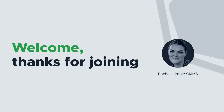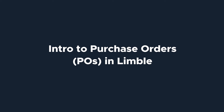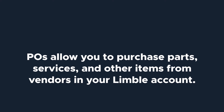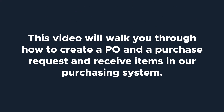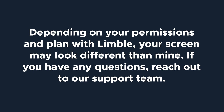Hi everyone, I'm Rachel with Limble's product team. Today we're going to be talking about purchase orders, or POs, in Limble. POs allow you to purchase parts, services, and other items from vendors in your Limble account. This video will walk you through how to create a PO and a purchase request, and receive items in our purchasing system. Depending on your permissions and plan with Limble, some of your screens may be different than mine. If you have any questions, reach out to our support team. Let's get started!